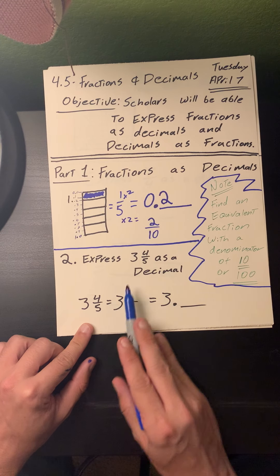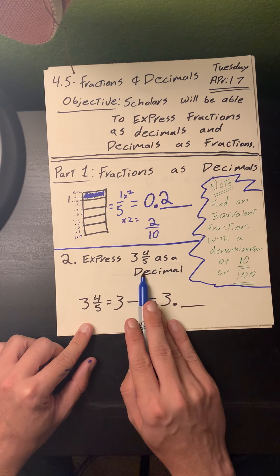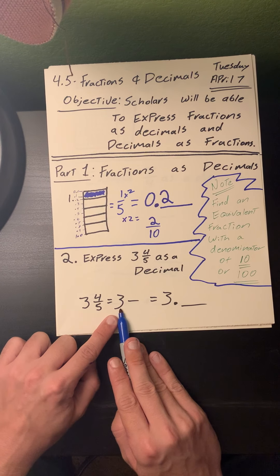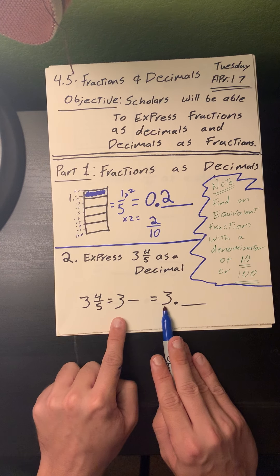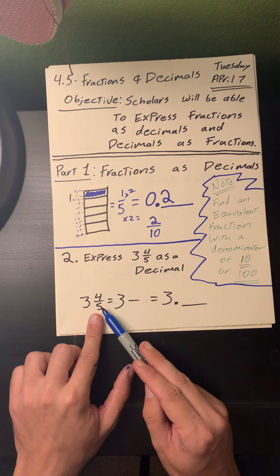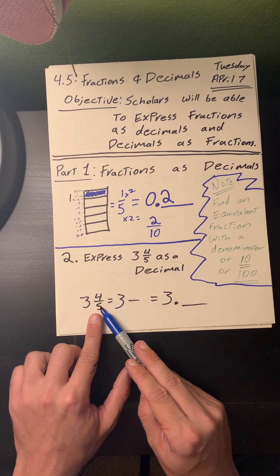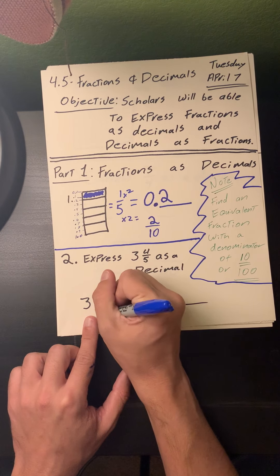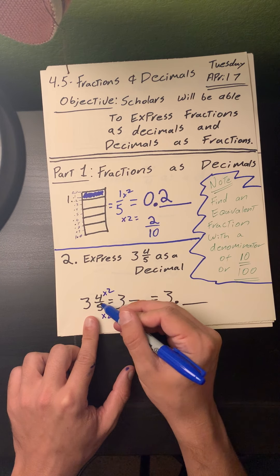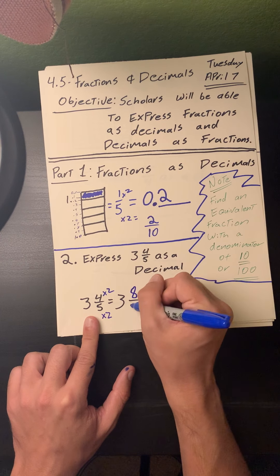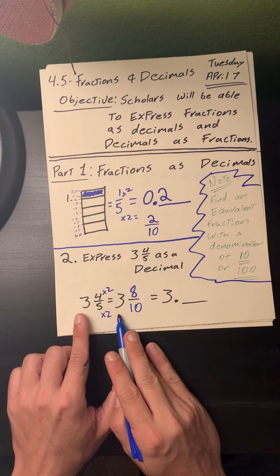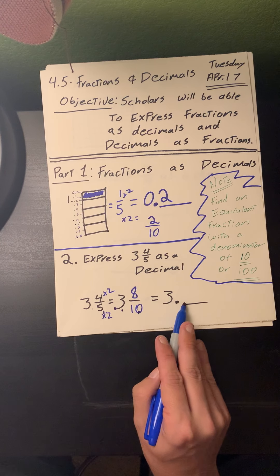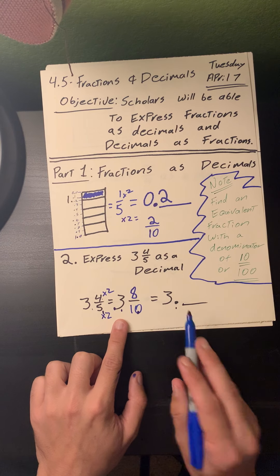Problem number two: I want to express the mixed number of 3 and 4 fifths as a decimal. My whole number stays the same throughout. Looking at my fraction, I have 4 fifths. Since 5 times 2 gives me 10, if I multiply both my denominator and numerator by 2, 4 times 2 equals 8, and 5 times 2 equals 10. So 3 and 4 fifths is equivalent to 3 and 8 tenths, written as the decimal 3.8.